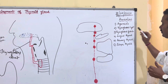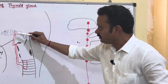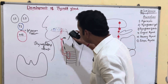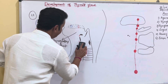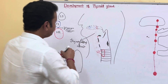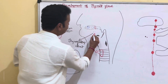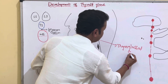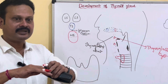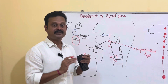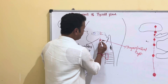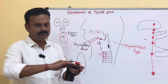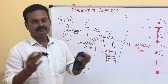The next anomaly is a thyroglossal cyst. The thyroglossal duct should normally disappear, but if some portion of it persists, it may result in a thyroglossal cyst, which assumes a cystic dilatation and moves with deglutition. When this cyst opens onto the surface of the skin, it forms a thyroglossal fistula.